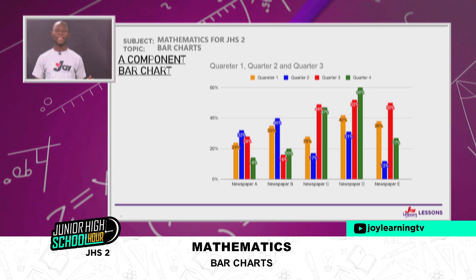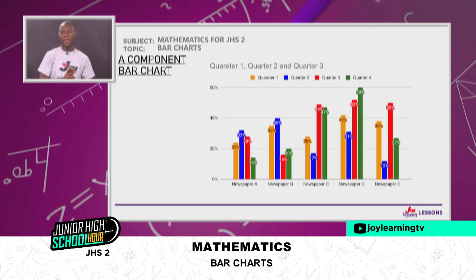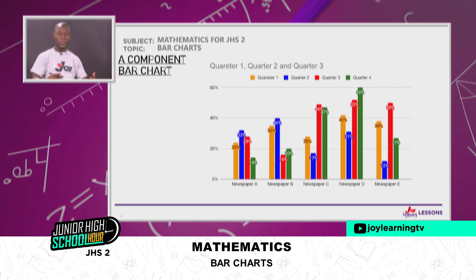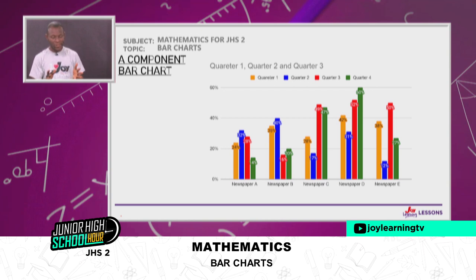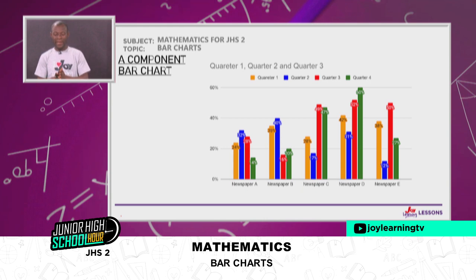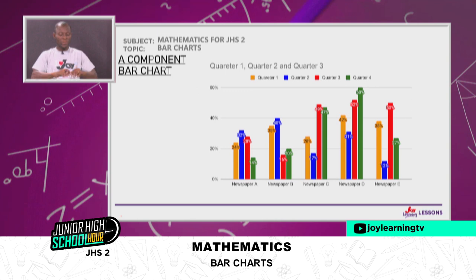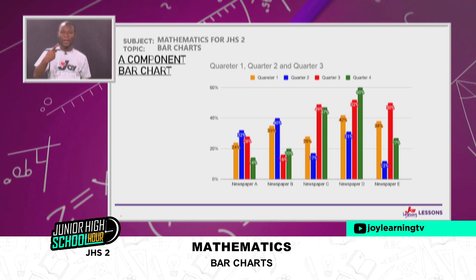We can also have the component bar chart — this is how that one looks. We cluster a group of them and put them together to help in the analysis. It is data presented in quarters, so we want to look at how each quarter behaved in a certain category — for example, in newspaper A, first quarter, second quarter, third quarter, and fourth quarter. We are not going to go into this in detail; we will focus on the simple bar chart as that is what our curriculum allows.